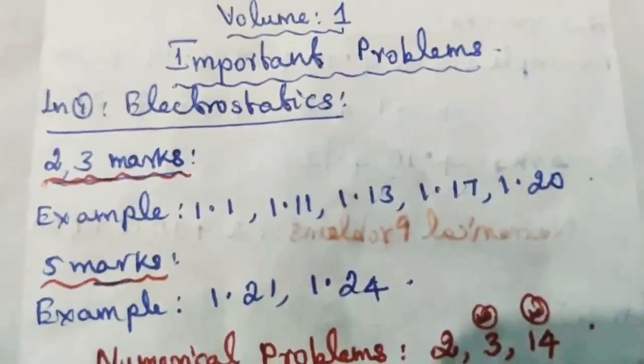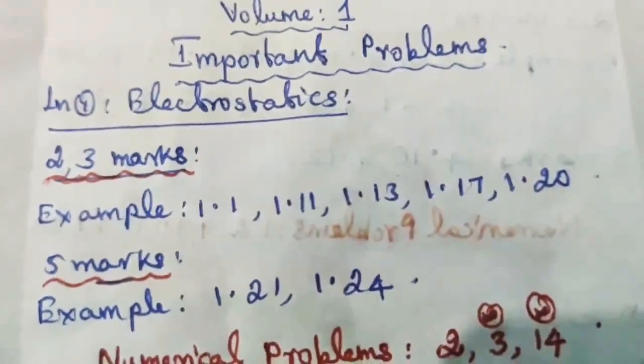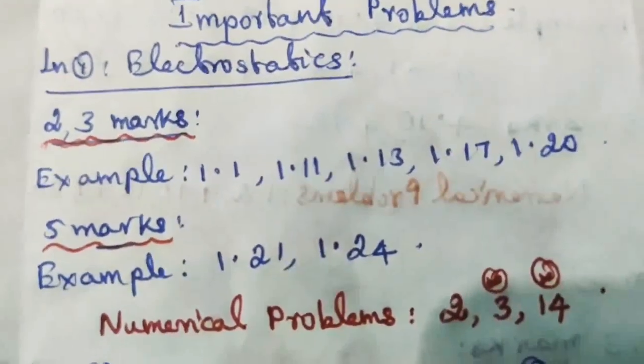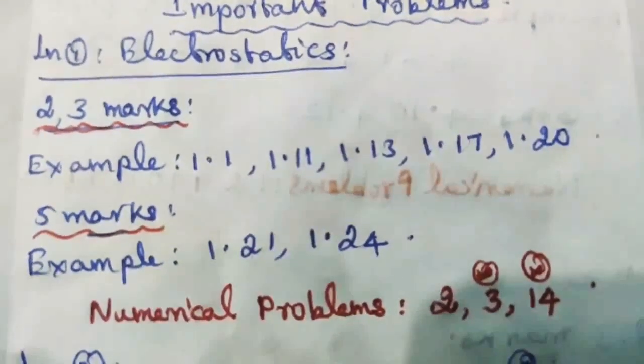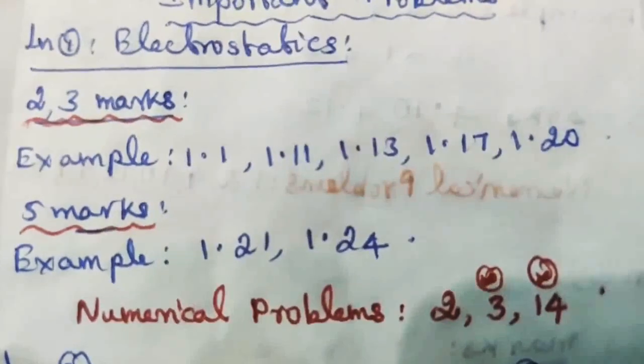Lesson 1 Electrostatics, 2 marks and 3 marks examples: 1.1, 1.11, 1.13, 1.17, 1.20.